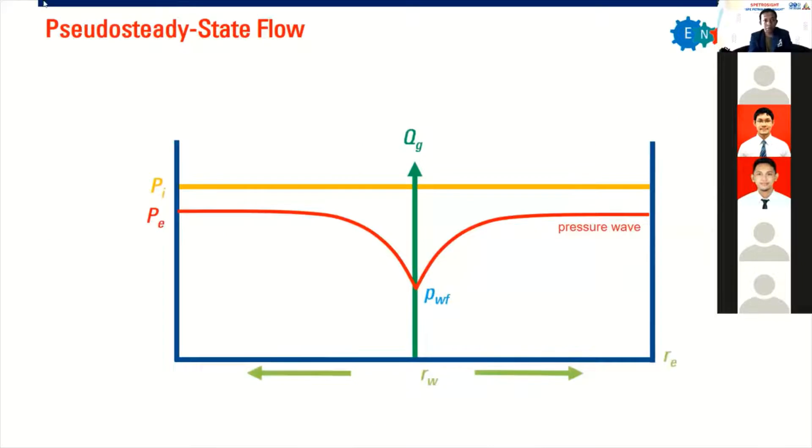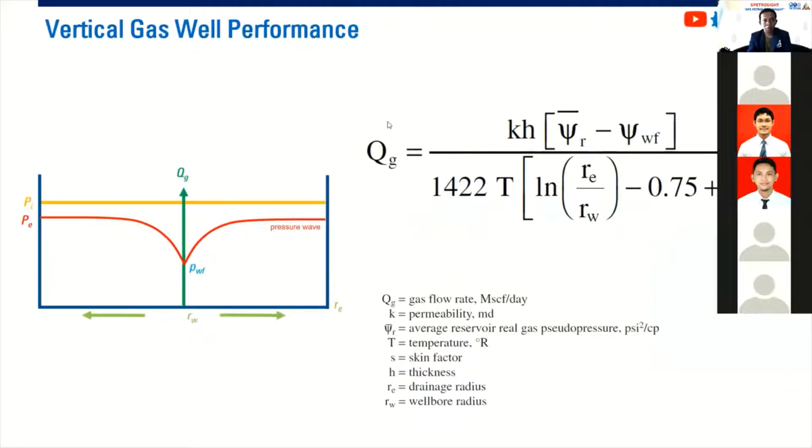And then we can also plot it like this one. If you have your well producing at QG, the gas flow rate, we start with initial reservoir pressure. This is the external pressure we produce. We create drawdown and then we have bottom hole flowing pressure here. So the pressure wave or the pressure trend will be like this if we reach pseudo steady state flow. We have boundaries. The radius of the reservoir is RE. This is the radius of our well bore. If this is true, if we reach this condition, then we can calculate our gas flow rate.